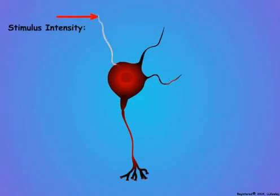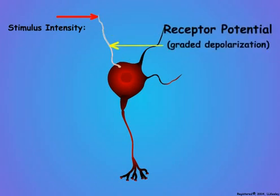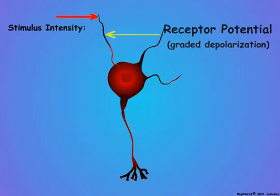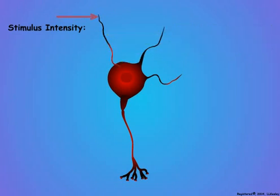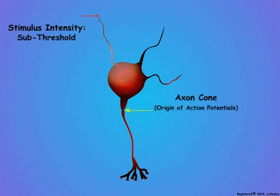The intensity of the stimulus produces a proportional electrical depolarization, or reversal of charge, in the dendrite. This graded depolarization is called the receptor potential. If the stimulus intensity is too weak, the receptor potential dies out before it reaches the axon cone, and the neuron does not convey any information about the stimulus.